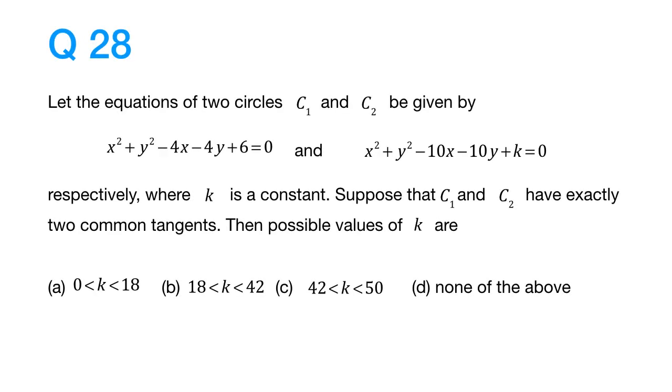Take a moment to read the question. We have been given the equations of two circles c1 and c2, and k here is a constant. It is given that c1 and c2 have exactly two common tangents. We have to find out possible values of k.